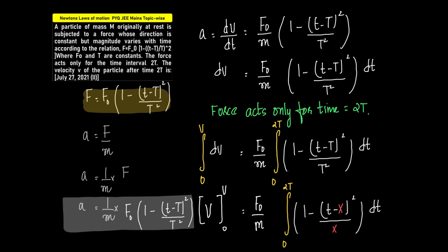The force acts only for the time interval 2T, so the upper limit for time is 2T and the lower limit is zero. The particle starts at rest so initial velocity u = 0, and it gradually attains velocity v, so the lower limit for velocity is zero and the upper limit is v.